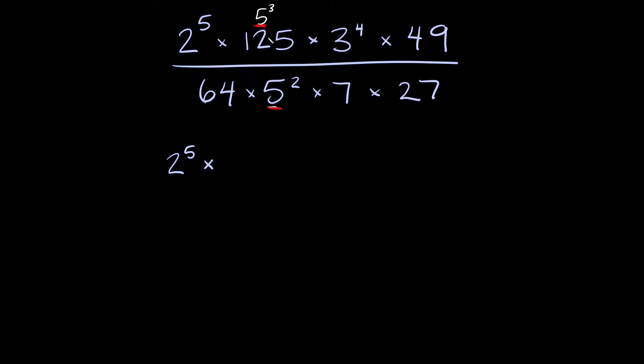So 125 we can rewrite as 5 cubed and then times 3 to the fourth already has an exponent on it times 49. Well 49 we can rewrite as 7 squared and that'll be convenient because we'll have a 7 on top and we already have one on the bottom. So we can rewrite that as 7 squared.